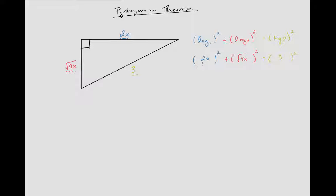I'm going to clean this up. 2x times 2x: 2 times 2 is 4, x times x is x². The √(9x²) squared—those are going to undo each other. √(9x²) times √(9x²) equals √(81x²), which is 9x. Lastly, 3² is just 9.